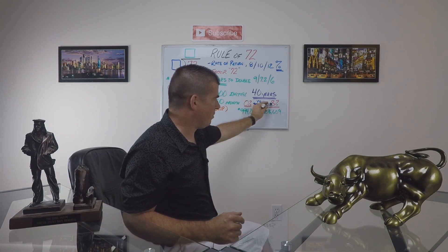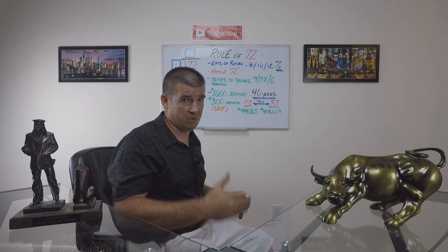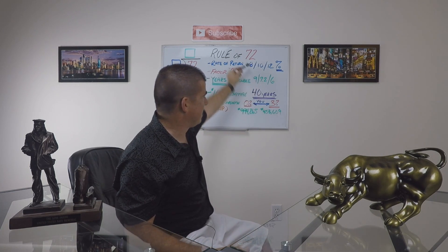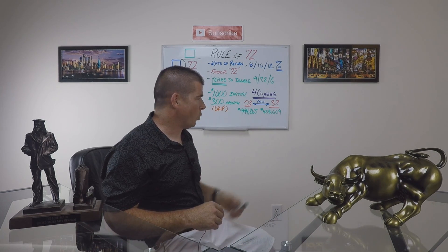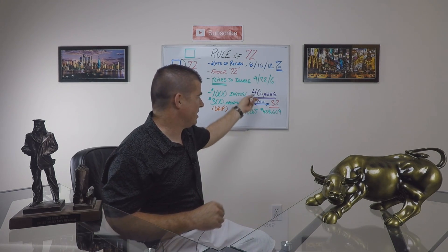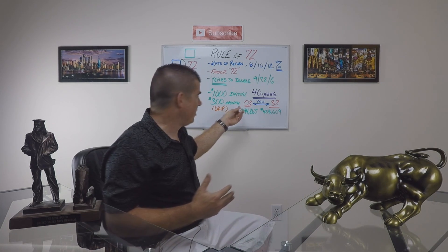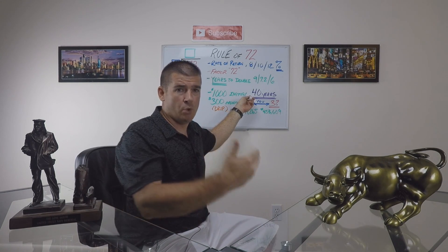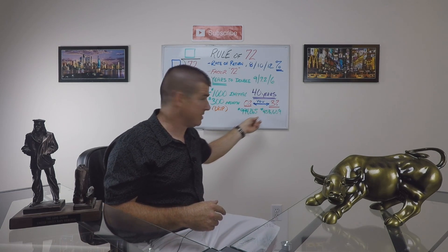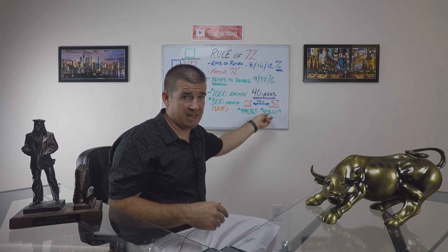The decision to go into a fee-based managed account — where the financial institution industry average is just over 3% — is going to render you, in the same scenario of 8% return, $1,000 down, $300 a month: only $453,609 over this same 40-year horizon. Running 5% through the Rule of 72, it takes your money 15 years to double, not nine. That's over a half a million dollars gone — lost to fees and management fees.